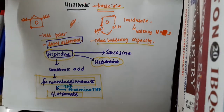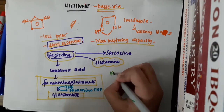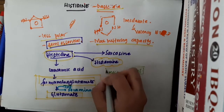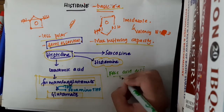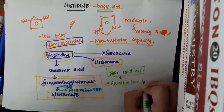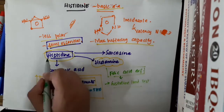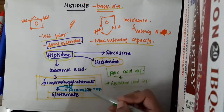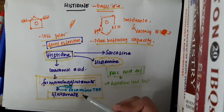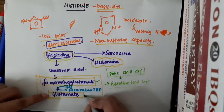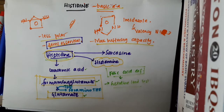The conversion of formiminoglutamate to glutamate occurs in the presence of tetrahydrofolate. This is important because tetrahydrofolate comes from folic acid. If there is folic acid deficiency, we can do a test called the histidine load test. In this test we give the patient histidine to take. Once he takes histidine, it gets converted to urocanate and then to formiminoglutamate in his blood. To convert formiminoglutamate to glutamate we require tetrahydrofolate, but here the patient has folic acid deficiency.